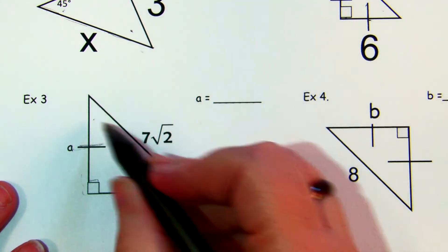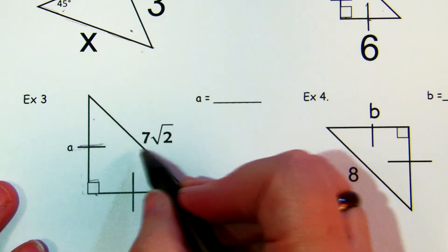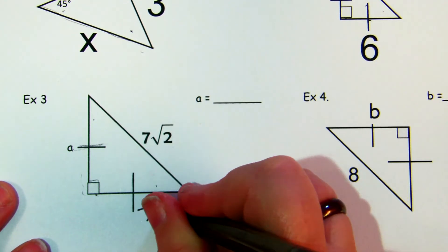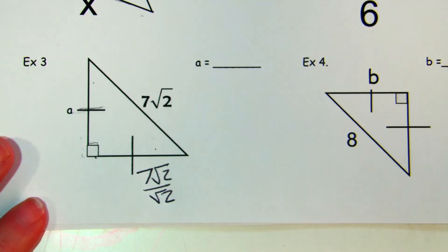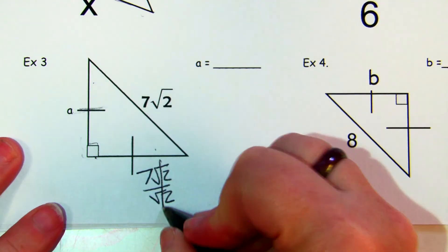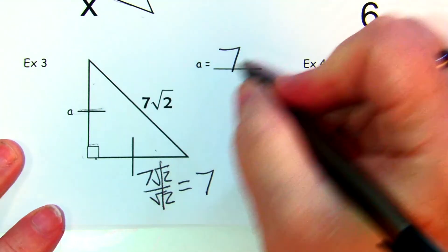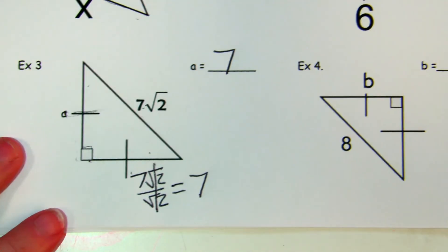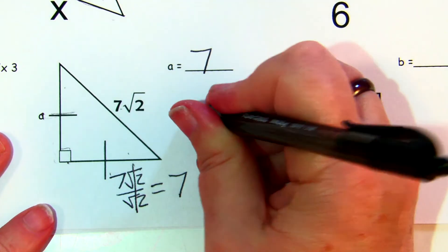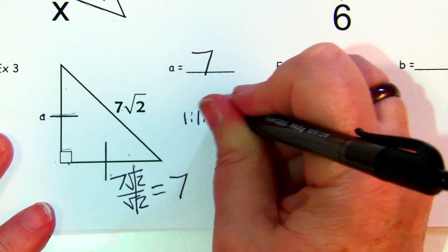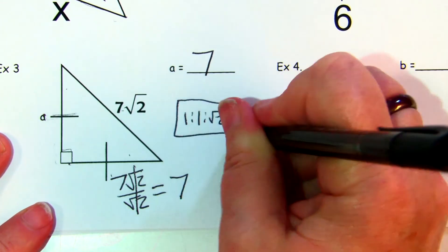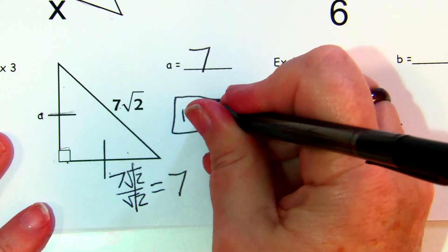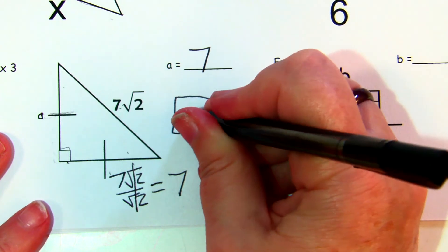Example three: this is a 45-45-90 triangle marked with isosceles tick marks on the sides. The hypotenuse is x√2, and this time the hypotenuse is given as 7√2. You divide 7√2 by √2, the √2 cancels, and you get 7 for each leg. The side relationship is 1 : 1 : √2.